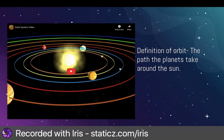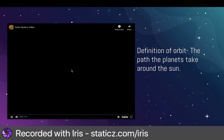So you see these colored lines? There's one line for each planet and it's showing you how it goes around the sun. Let's watch a quick video.